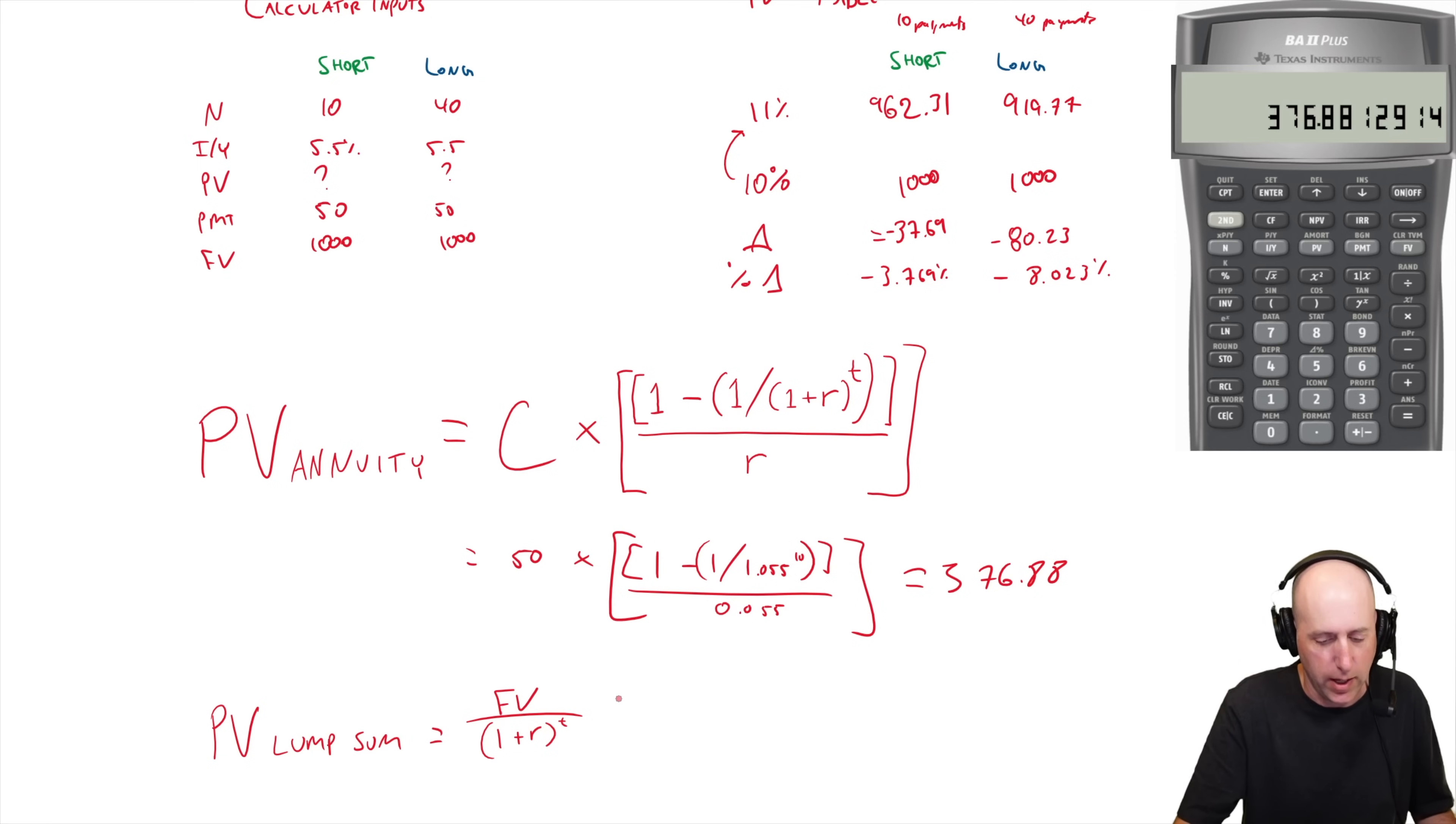Let's do the lump sum, the thousand dollars we get at the end of 10 years. Thousand dollars divided by 1.055 to the power of 10, 1.708, and I go 1 over X times a thousand.